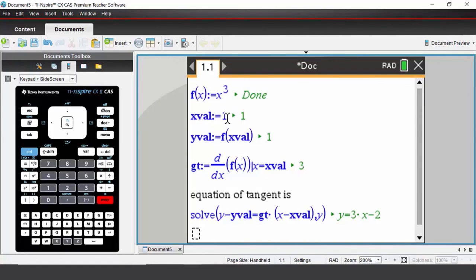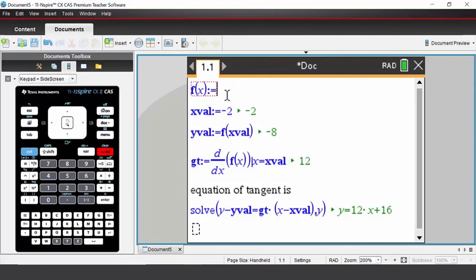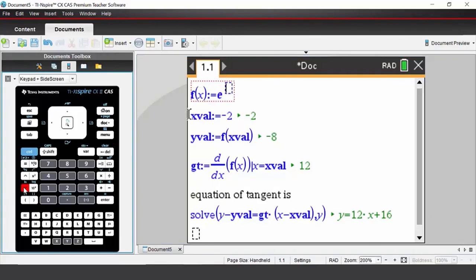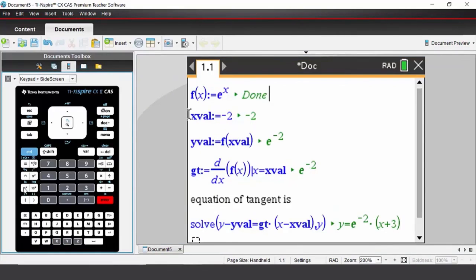If I wanted to change my x value, I can just come up and change that to say negative 2, and again everything will update. If I wanted an exponential function, I could come up here and choose my exponential, x, press enter, and it will update the equation of the tangent.